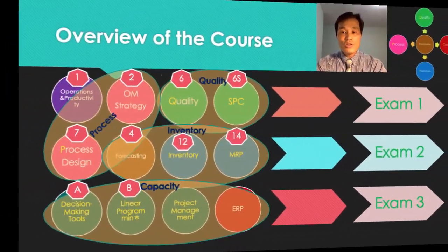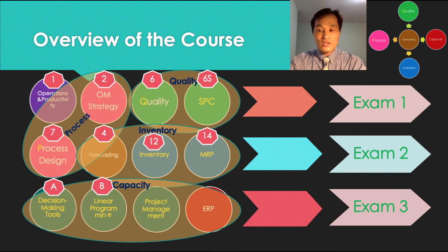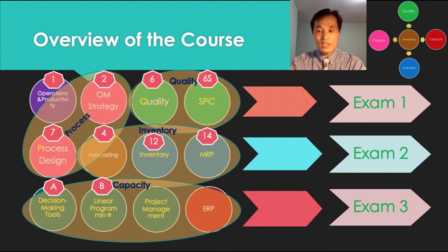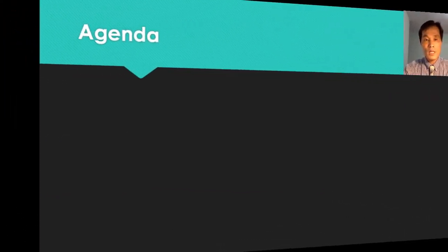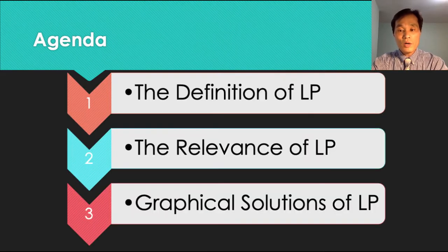Look at the structure of this course again. This lecture will introduce linear programming to you. Linear programming is an optimization tool that helps managers make decisions given the many constraints they face day to day. Among many optimization problems, it can be used to determine the capacity of production or service offerings, and many other problems. This lecture is broken into three parts: the substance of linear programming, the relevance of linear programming, and the graphical solutions of linear programming.